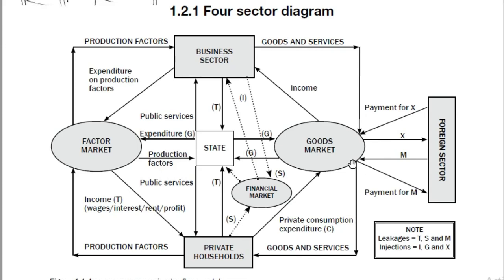Now let's go to injections — money coming into our circular flow. The first injection is investment, shown by this dotted line to the business sector. The money that private households saved earlier becomes an investment at a later stage to the business sector. The second injection is government spending: the government taxes businesses and private households and spends that money on the goods market and the factor market, which is an injection into our economy.